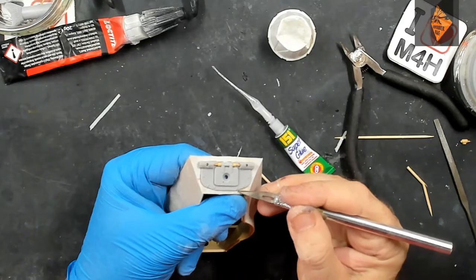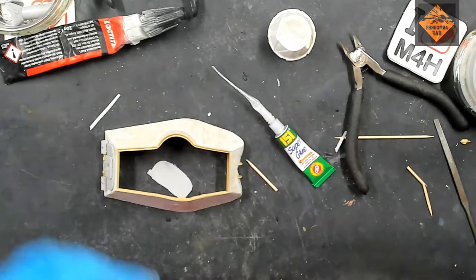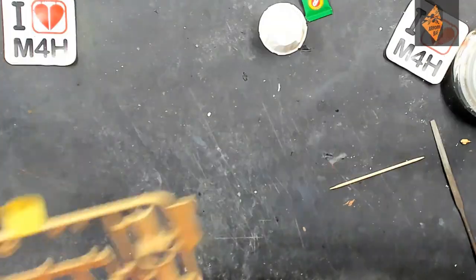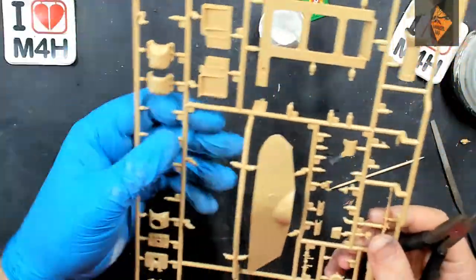There we go, that's all the Zimmerit on the rear part of the turret. Honest, trust me, I'm a tree surgeon. Now for the door workings to go on the rear hatch, so let's crack on and do that.